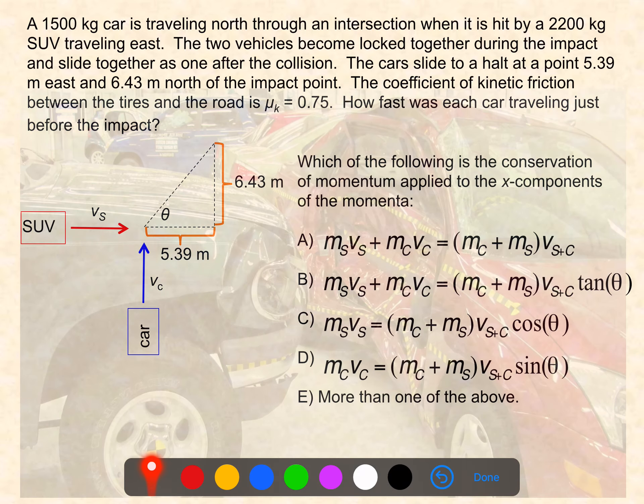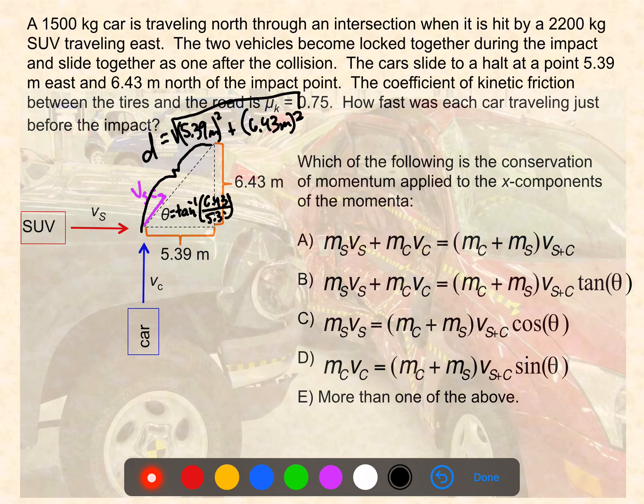Let's start with the x direction to begin with. I'm just going to redraw this velocity vector here. This distance d is going to be equal to the square root of 5.39 meters squared plus 6.43 meters squared. And then this angle theta could be computed as the inverse tangent of 6.43 over 5.39.